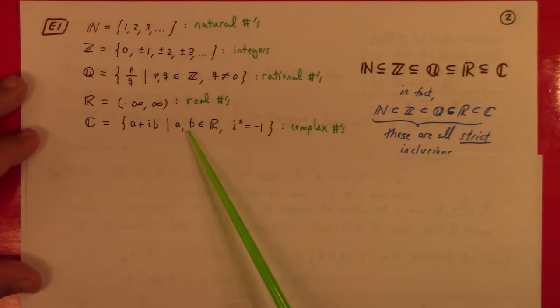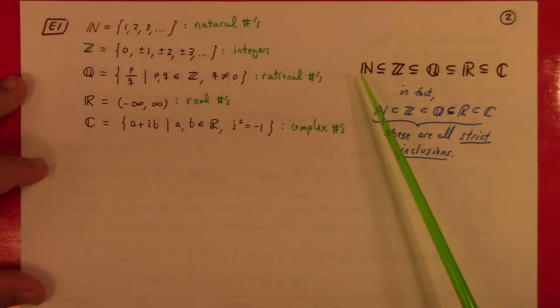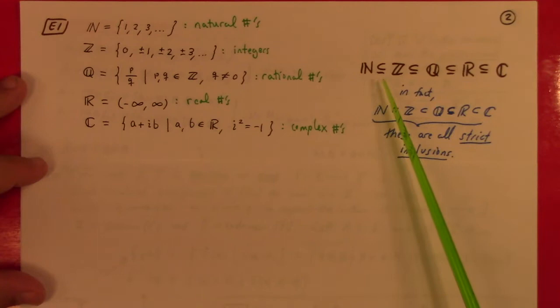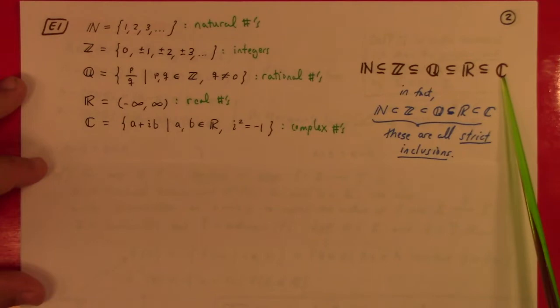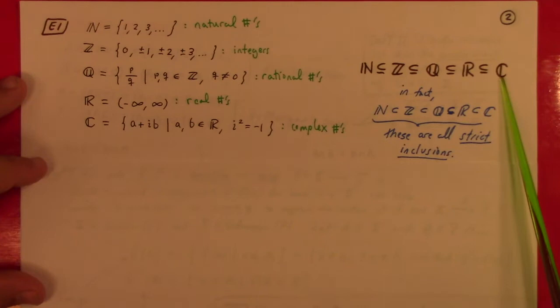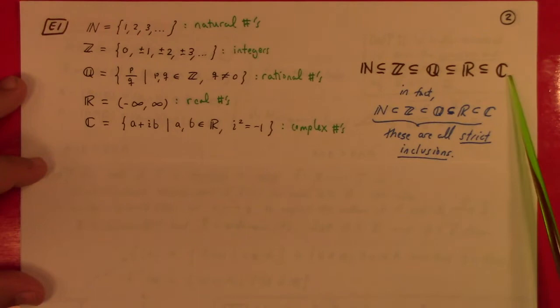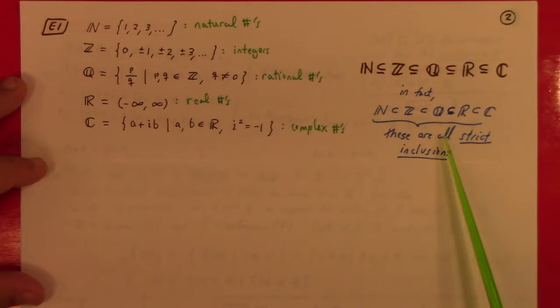Complex numbers are A + iB such that A and B are real and i² = −1. The larger point here is that with these standard number systems, we view them as concrete subsets of one another: N ⊂ Z ⊂ Q ⊂ R ⊂ C. Every natural number is a complex number, and likewise down the chain. These are actually strict inclusions — for instance, there are complex numbers which are not real numbers.